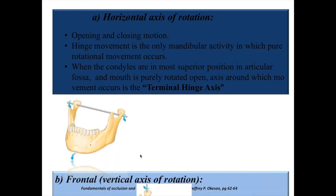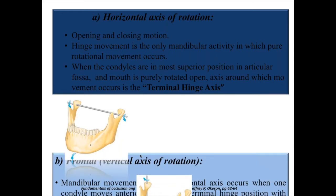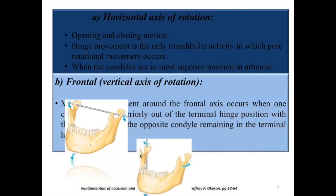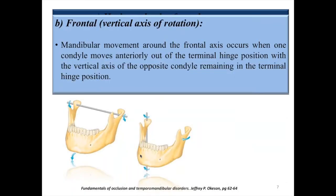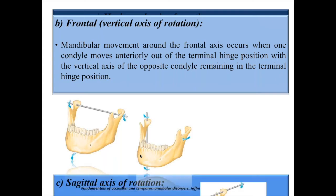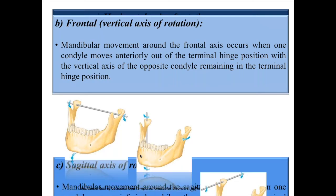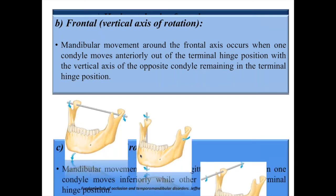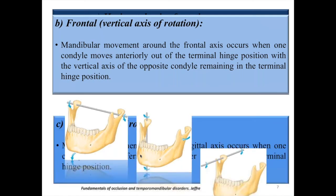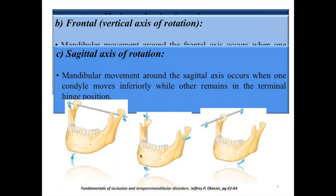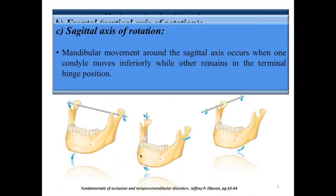The second is the frontal, or vertical, axis of rotation. Mandibular movement around the frontal axis occurs when one condyle moves anteriorly out of the terminal hinge position while the vertical axis on the opposite condyle remains in the terminal hinge position. The third is the sagittal axis of rotation, where mandibular movement occurs when one condyle moves inferiorly while the other remains in the terminal hinge position.